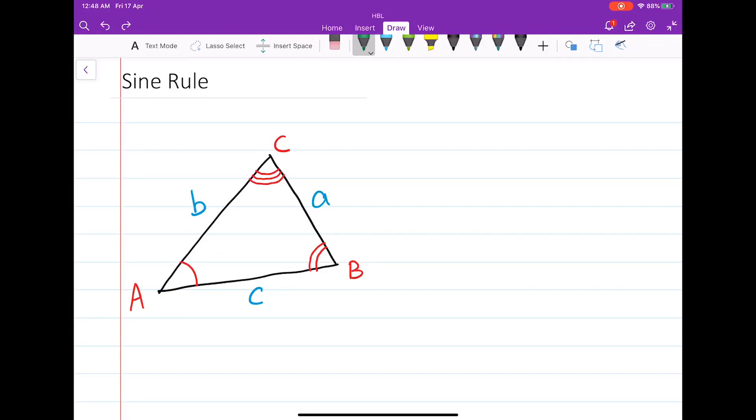Let's consider this new section on sine rule. Let's say we have a triangle ABC. In this case, here is A, B, C. We can also consider that this angle here is A, this angle here is B, and this angle here is C.